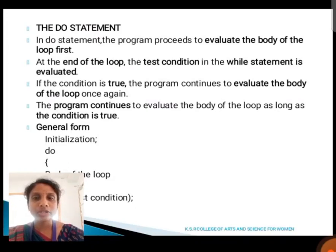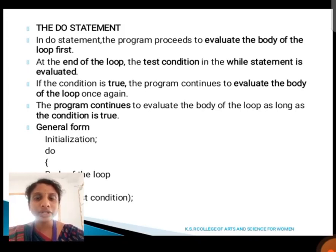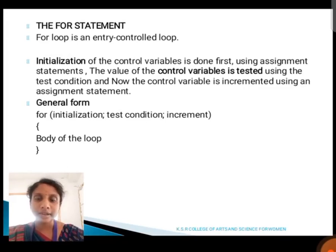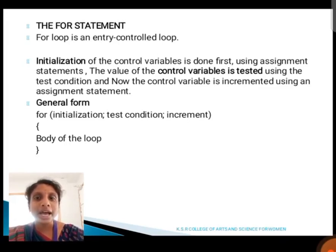Next, we are going to see about the do statement. In the do statement, the program first evaluates the body of the loop. At the end of the loop, the test condition in the while statement is evaluated. If the condition is true, the program continues to evaluate the body of the loop again, and this continues as long as the condition is true. The for loop is also known as an entry control loop. Initialization of a control variable is done first using an assignment statement, then it checks the control variable using the test condition, and the control variable is incremented using an assignment operator.